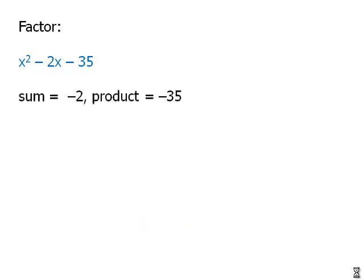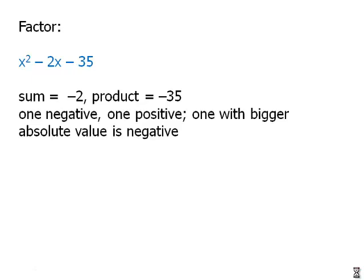Here's another one. Here, we need a sum of -2 and a product of -35. So, we know that one is negative and one is positive of the two numbers we're looking for because they have a negative product. And the one with a bigger absolute value is negative.